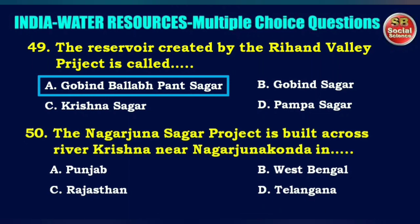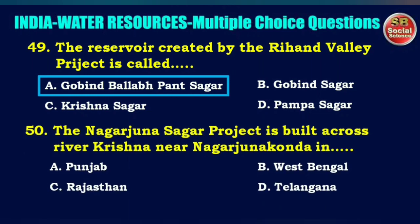The Nagarjuna Sagar project is built across river Krishna near Nagarjuna Konda in — options are Punjab, West Bengal, Rajasthan, or Telangana. The right answer is option D: Telangana.